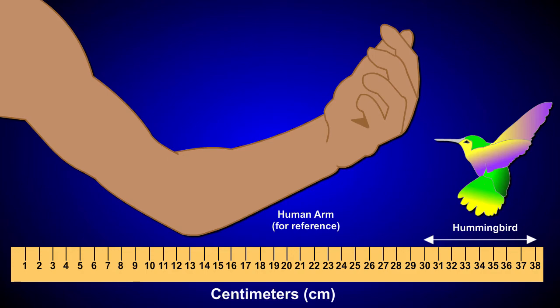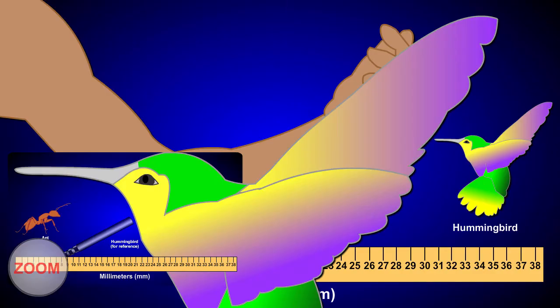Millimeters are 10 times smaller than centimeters. Let's zoom in further to look at the scale of millimeters. Ants are around 5 to 10 millimeters in length.